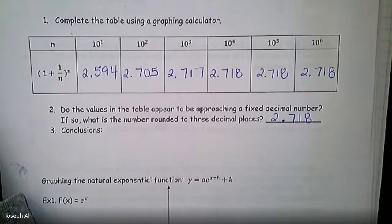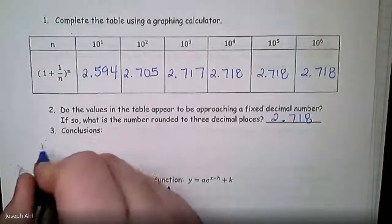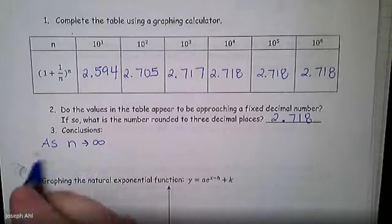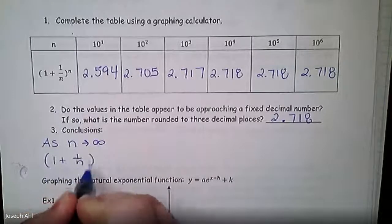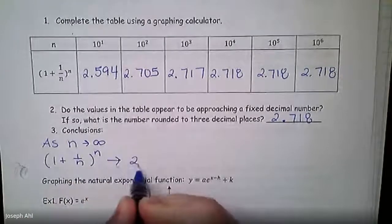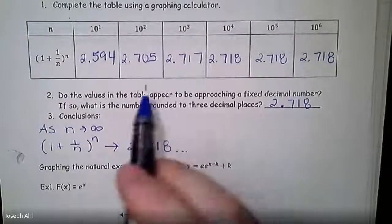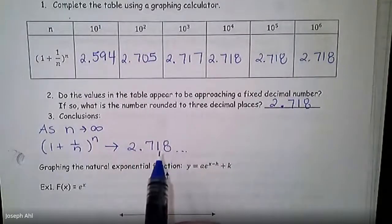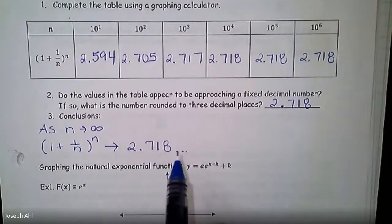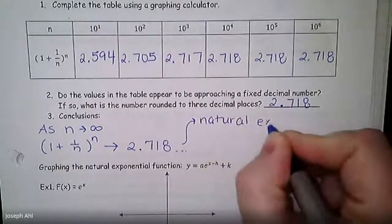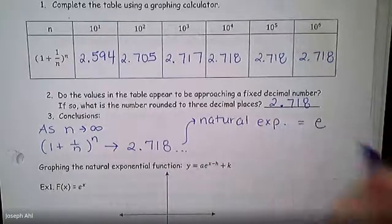So the conclusions that I want us to make here is that as n gets larger and larger, so the concept here is as n goes to infinity, the expression (1 + 1/n)^n is getting closer and closer to this value, 2.718, approximately. And because it's approaching this special value, this is actually known in math as the natural exponent. The natural exponent is denoted by e.